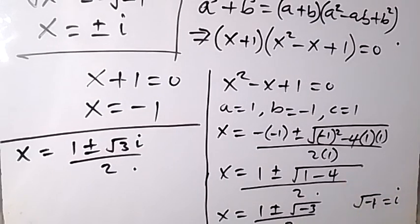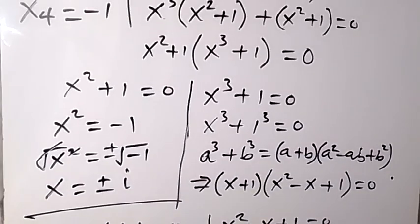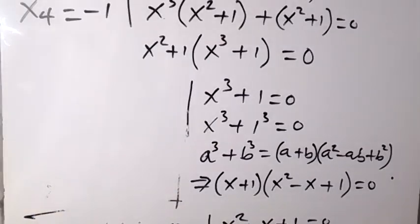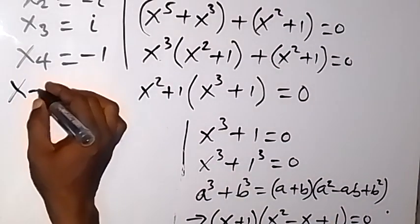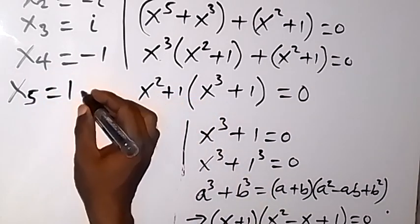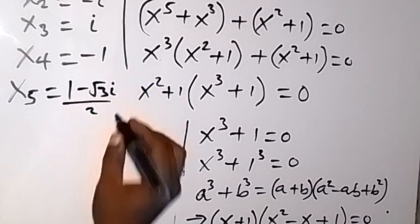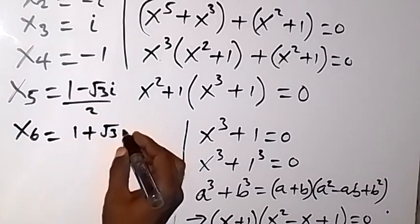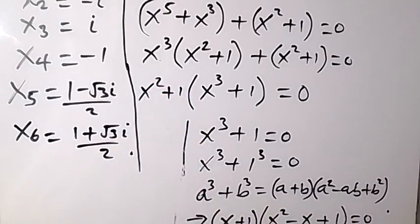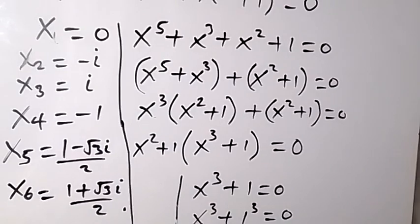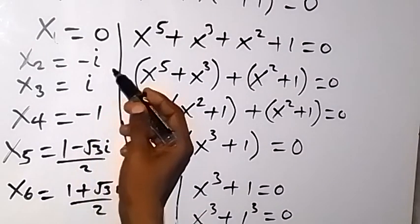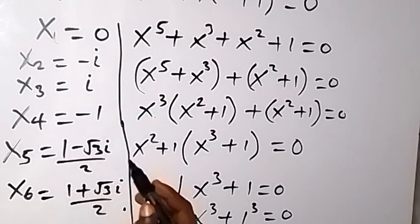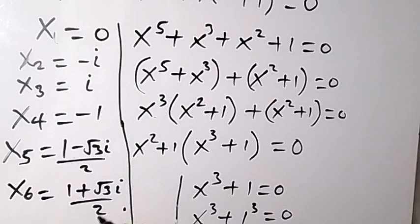So we have two more solutions: x₅ equals 1 minus root 3 i over 2, and x₆ equals 1 plus root 3 i over 2. Therefore, we have come to the end of this class. The six solutions are: x equals 0, minus i, i, minus 1, (1 minus root 3 i)/2, and (1 plus root 3 i)/2. Thank you for watching — don't forget to subscribe for more videos. See you in the next class!